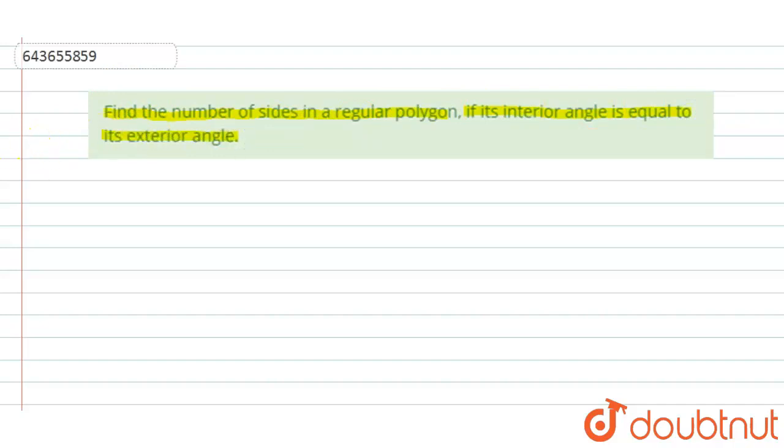So here we will use two formulas, the first one for the interior angle and the second one for the exterior angle. In case of a regular polygon, the interior angle is given by (n-2) × 180° divided by n.